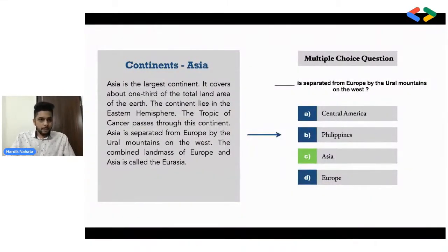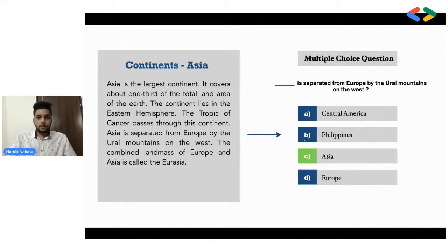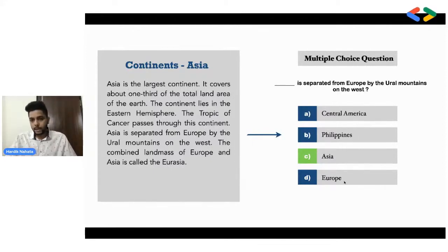I want you to pay attention to the content on the left side — there's a small paragraph about Asia, which is the input to our model. On the right side, we have a multiple choice question generated from this content. The answer to the question about what is separated from Europe by the Ural mountains is Asia. But what about the other options? How do we come up with wrong options that are plausible but not too different from the correct answer? That's the key problem we're trying to solve here.